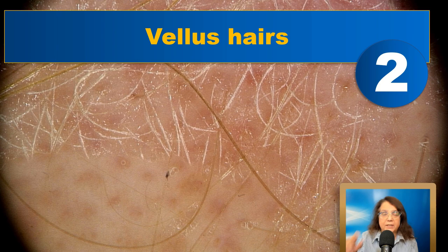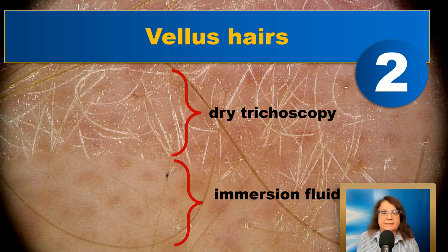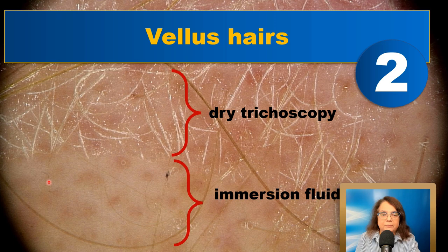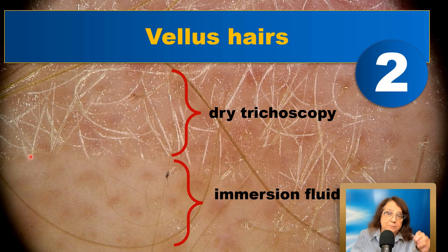A second trichoscopy feature, which I already mentioned, are the vellus hairs — very short, very thin, and almost always hypopigmented. Importantly, do not use immersion fluid if you want to visualize vellus hairs, because the immersion fluid will make these hairs visually disappear. Without the fluid, you will see only the yellow dots in the lower part of the image, which mark the hair follicle opening — a good sign meaning the follicles are still present and hair regrowth is likely possible.